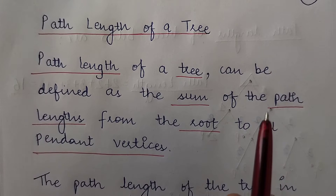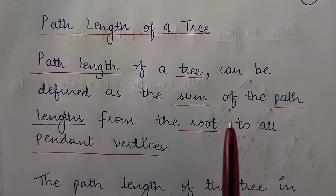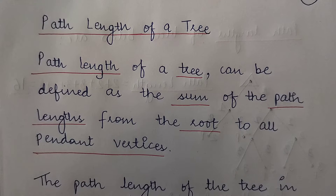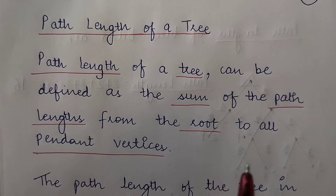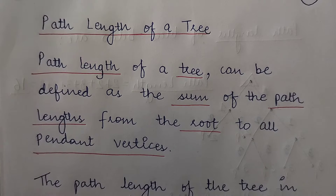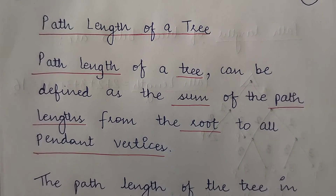The path length is the length of the path starting from the root till the pendant vertices. The sum of all such path lengths of all the paths from the root to the pendant vertices gives you the path length. For example, if you have five pendant vertices in a tree, the sum of all the paths starting from the root till all five pendant vertices will give you the path length of the tree.